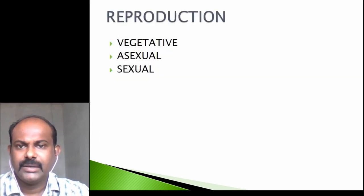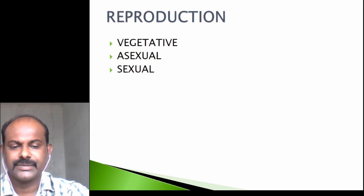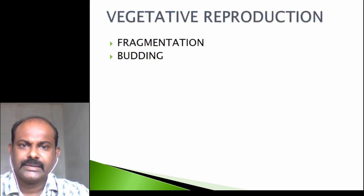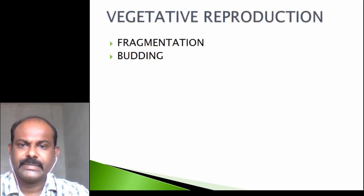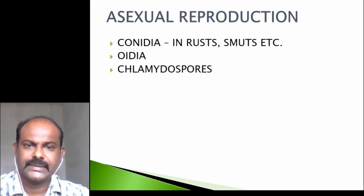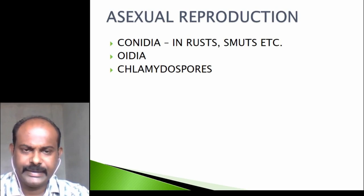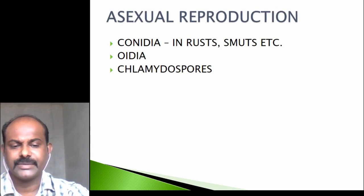Reproduction in this group can occur either by vegetative, asexual, or sexual means. Vegetative reproduction can take place by fragmentation and budding. Asexual reproduction takes place by different types of spores like conidia (in the case of rusts and smuts), oidia, or chlamydospores.